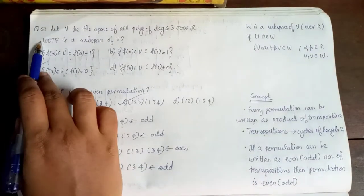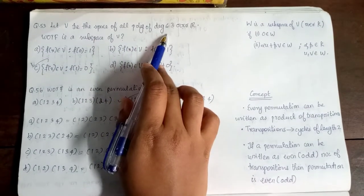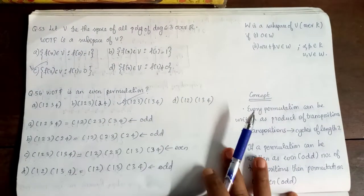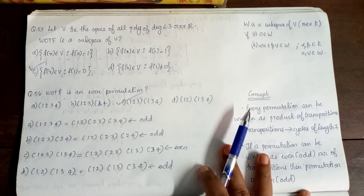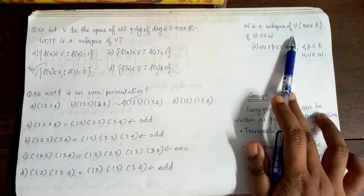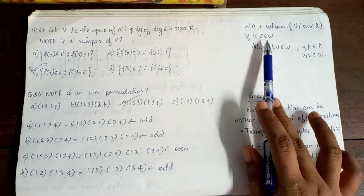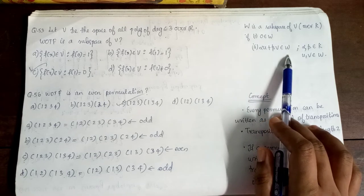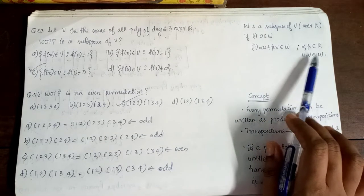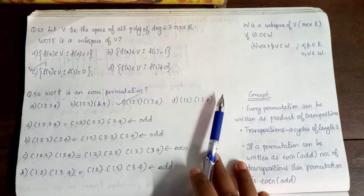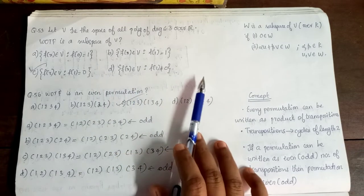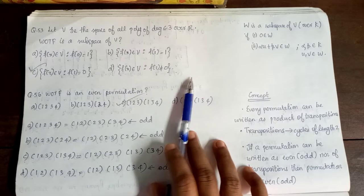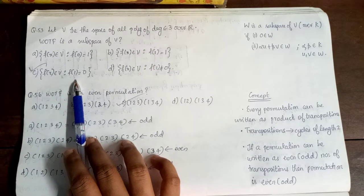Next, Question 53: Let V be the space of all polynomials of degree less than or equal to 3 over R. Which of the following is a subspace of V? A subspace W requires: 0 is an element of W, and alpha·u plus beta·v is an element of W for alpha, beta in k and u, v in W. Checking options A, B, D — zero is an element of W, so option C is the correct subspace.